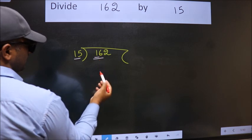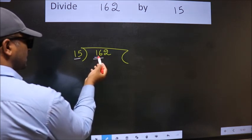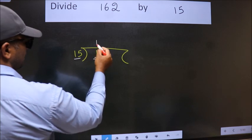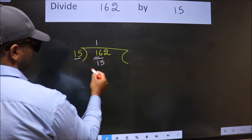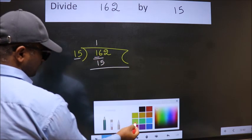A number close to 16 in 15 table is 15. 15 once 15. Now we should subtract.